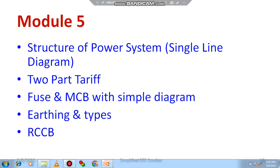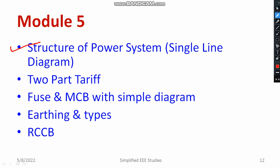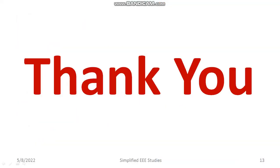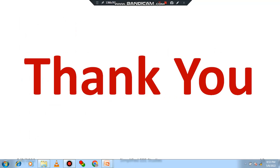Regarding module 5, there is no choice — please study the complete module 5. Study the single line diagram of the power system, the basic equation of two-part tariff, and work out a numerical example if time allows. Study the circuit breaker with a neat diagram, and the types of earthing — plate earthing and pipe earthing, their differences with diagrams and dimensions. Study residual current circuit breaker (RCCB) and try to answer this part first.